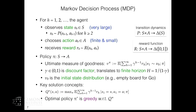Furthermore, Q* satisfies what we call the Bellman equation — the famous principle of optimality — which says the optimal value in the current state equals the immediate reward plus the optimal discounted future value for the next time step in expectation. Here the expectation is taken over the transition probability from the current state and action. This is a fixed-point equation where Q* appears on both sides, and it's nonlinear because of the max operator. The existence of this Bellman equation is crucial for learning a policy from just single-step transitions.